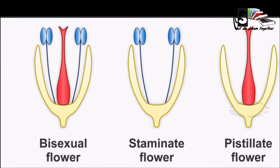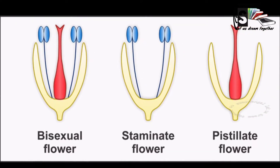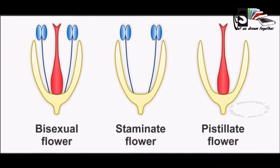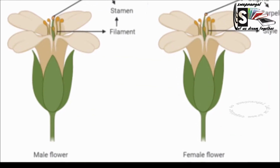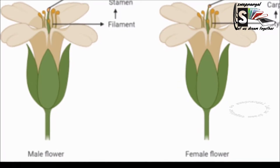There are two types of flowers: bisexual flowers and unisexual flowers. The bisexual flowers contain both stamens and a pistil. The unisexual flowers only contain either the stamens or a pistil. Flowers that have only stamens are called male flowers, and flowers that only have pistils are called female flowers.